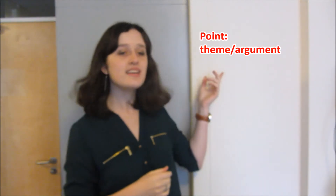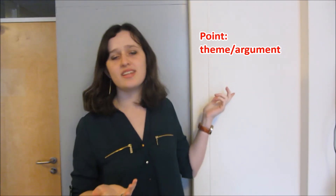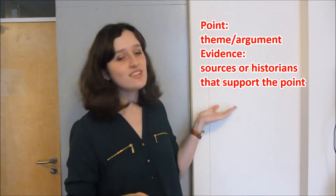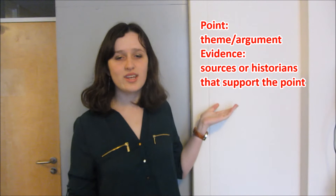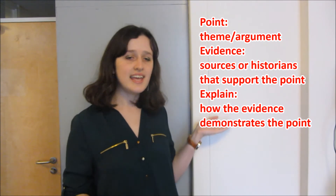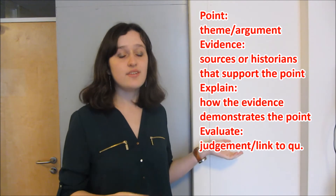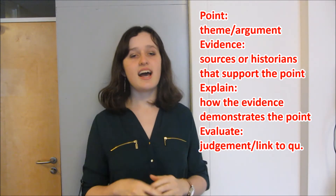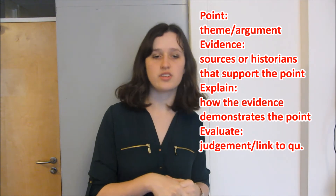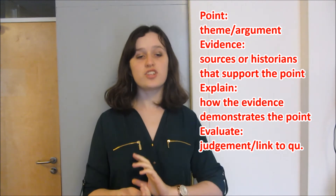Using the PEEE approach can help us think about how we can evaluate in an essay. P is for Point — a theme or argument used to answer the question. E is for Evidence — the sources or historians that support your view. E is for Explain — how the evidence demonstrates the point you've made. And E is for Evaluate — how the point or paragraph answers the question. This final part delivers a brief judgement on the validity of the point made.